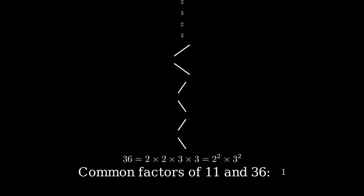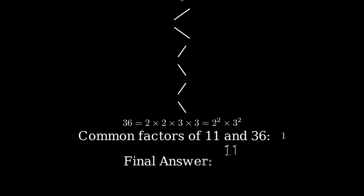Since the greatest common factor is 1, this means our fraction cannot be simplified any further. Therefore, 11 over 36 is already in its simplest form.